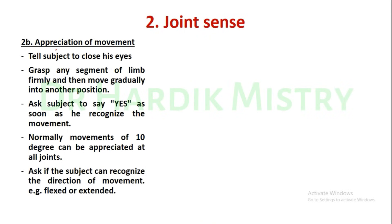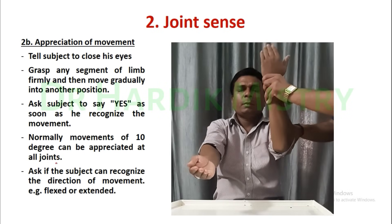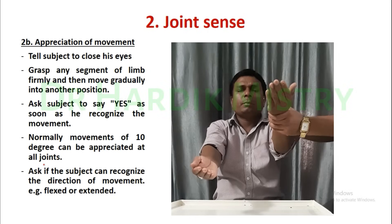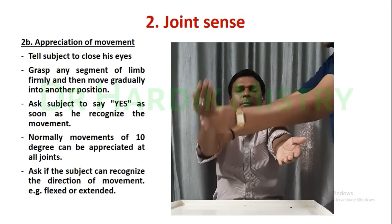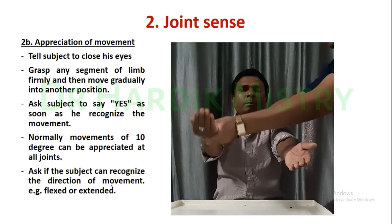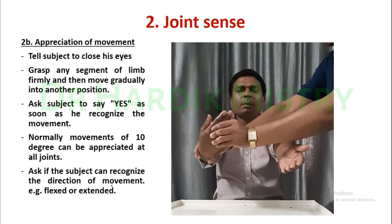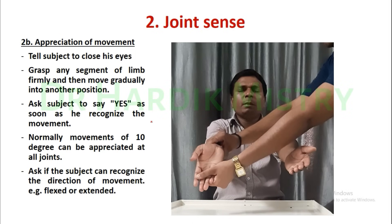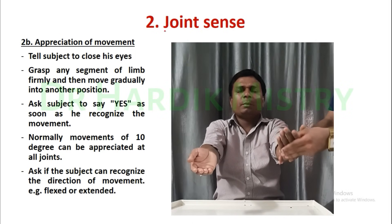Now the next is appreciation of movement. Tell the subject to close his eyes. Grab any segment of the limb firmly and then move gradually into another position. Ask the subject to say yes as soon as he recognizes the movement. Normally, movement of 10 degrees can be appreciated at all joints. Ask if the subject can recognize the direction of the movement, either flexion or extension.